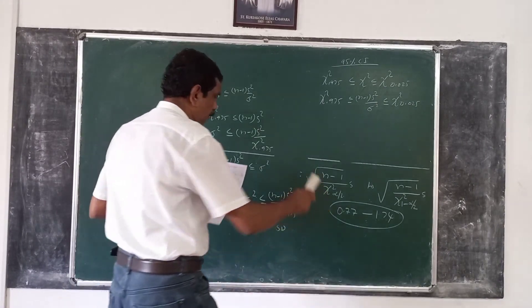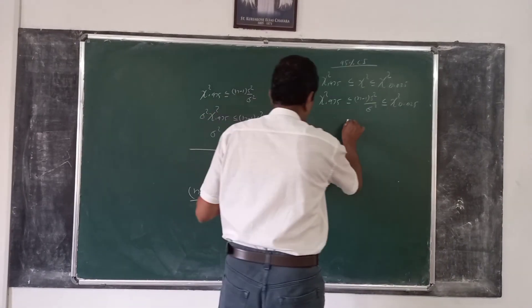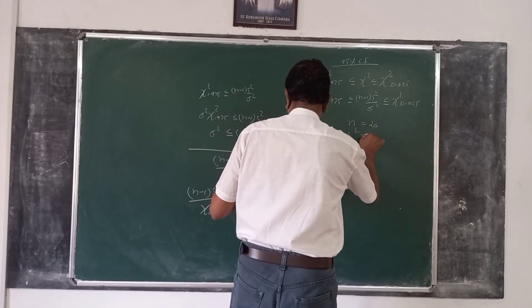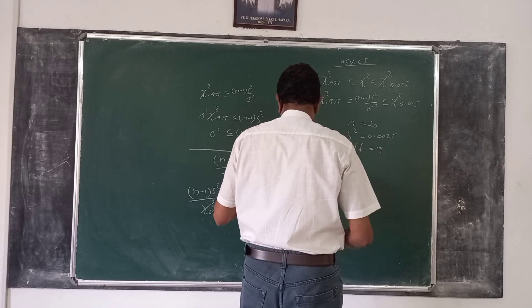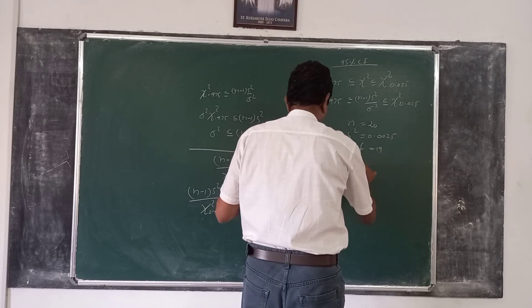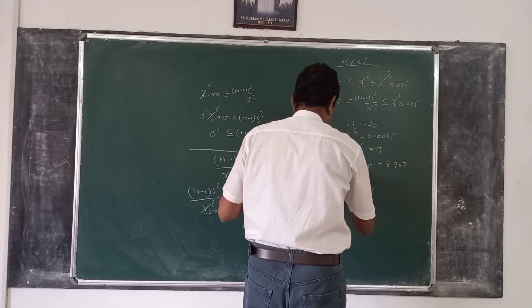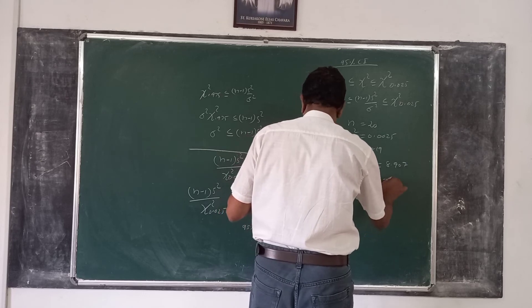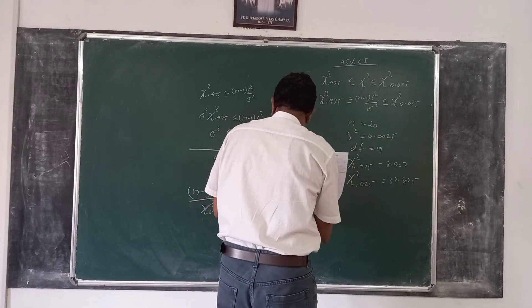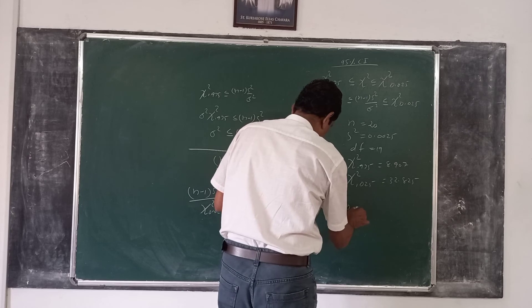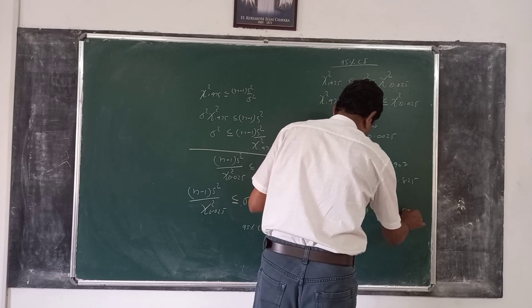Consider one more example. Suppose that n is 20, s-squared is 0.0025, degrees of freedom is 19, chi-square (0.975) is equal to 8.907, and chi-square (0.025) is equal to 32.852. Substituting all these values in the formula, you will get 0.0014 less than or equal to sigma-squared less than or equal to 0.0053.